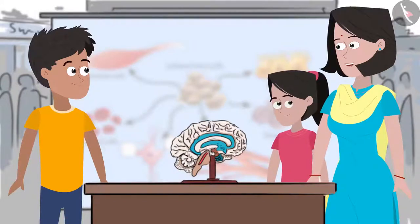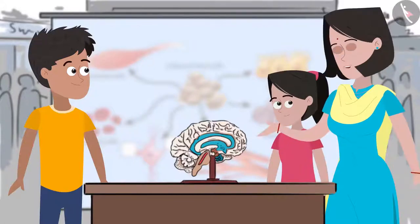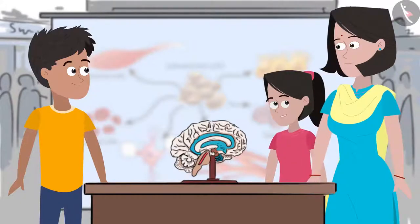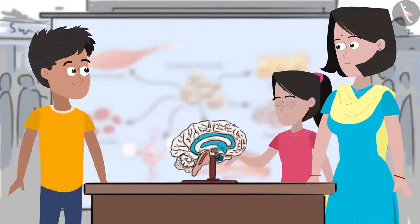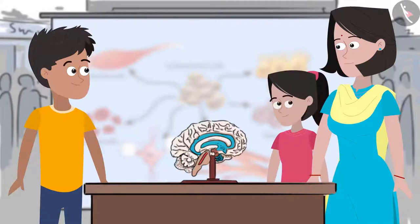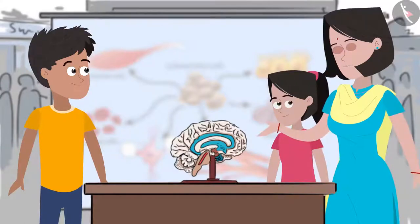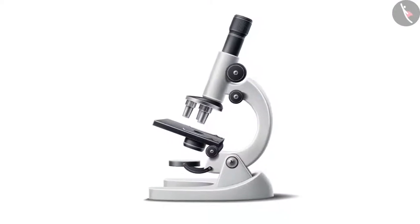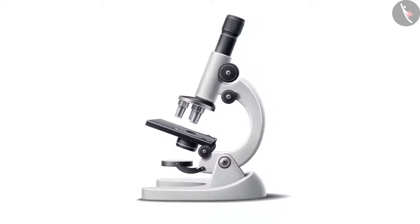Everything living or non-living in this universe is made up of atoms, even the cells. Oh, which means that the cells must be bigger than the atoms. Can we see what cells look like? Yes, but you need a microscope for that. The cells are so tiny that they cannot be seen through the naked eye.